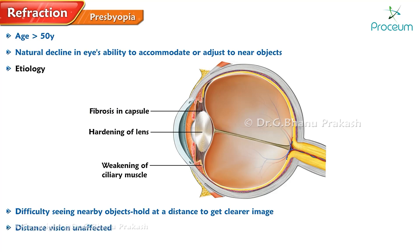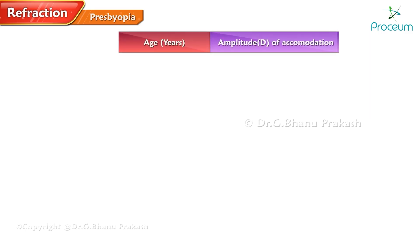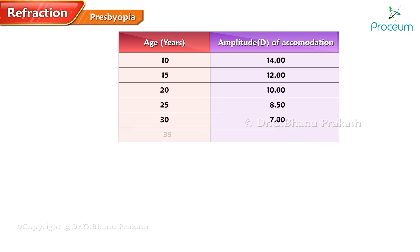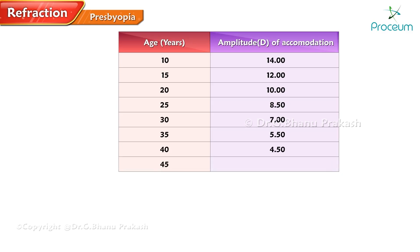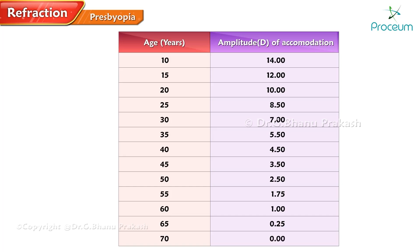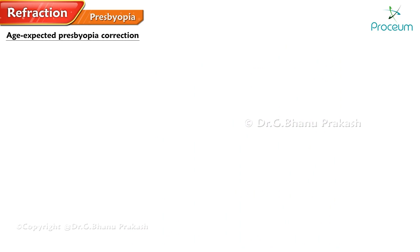Here is a table showing the amplitude of accommodation with age. At age 10, the amplitude is 14 diopters; at 15, it's 12; at 20, it's 10; at 25, it's 8.5; at 30, it's 7; at 35, it's 5.5; at 40, it's 4.5; at 45, it's 3.5; at 50, it's 2.5; at 55, it's 1.75; at 60, it's 1 diopter; at 65, it's 0.25; and at age 70, the amplitude is 0 diopters. These values can be used as a guideline for expected presbyopia correction.